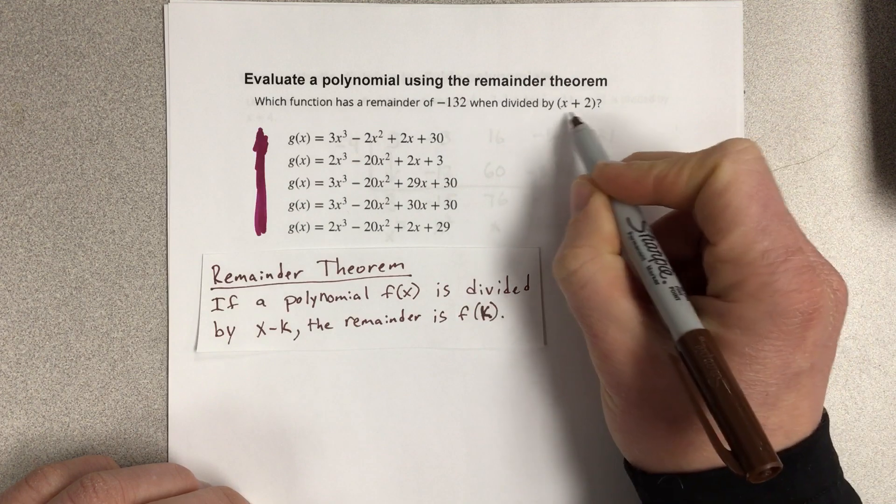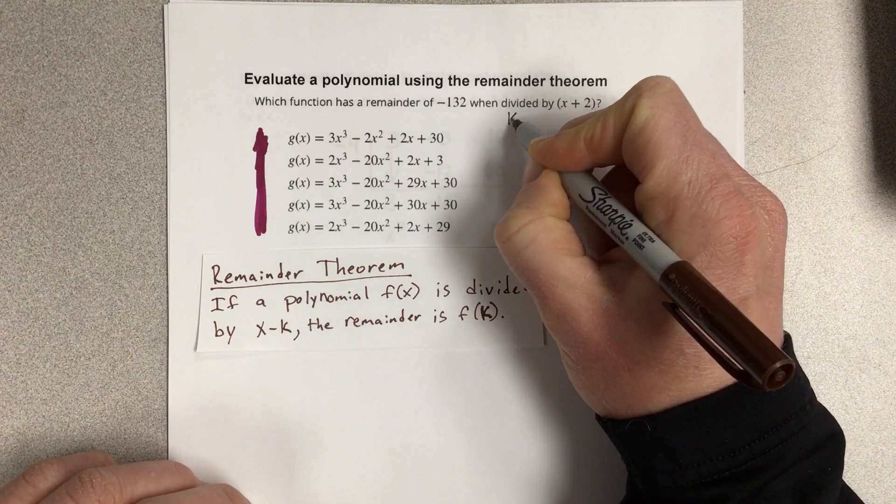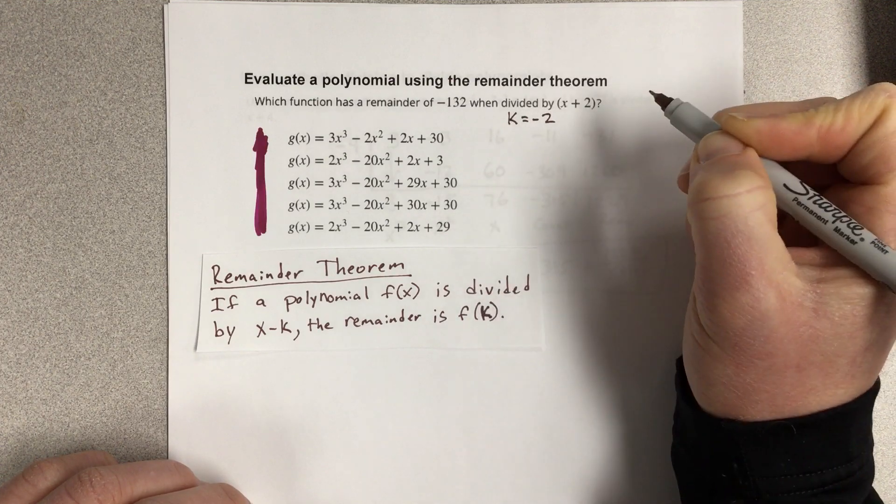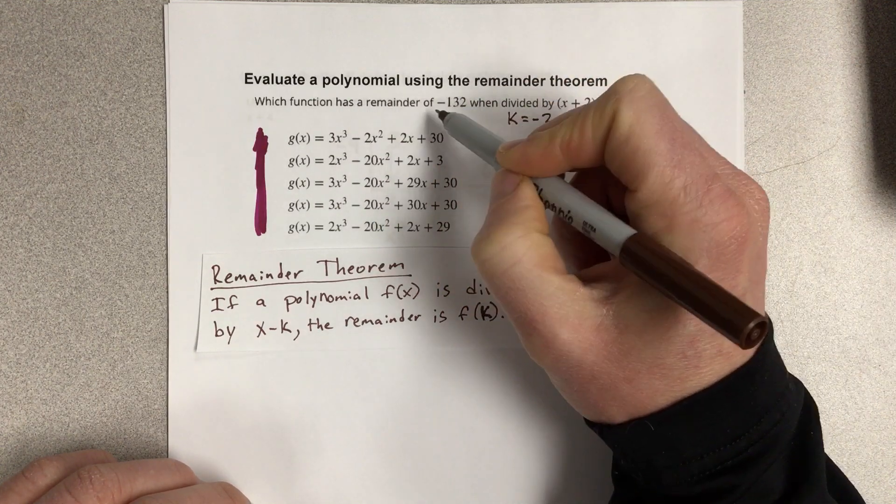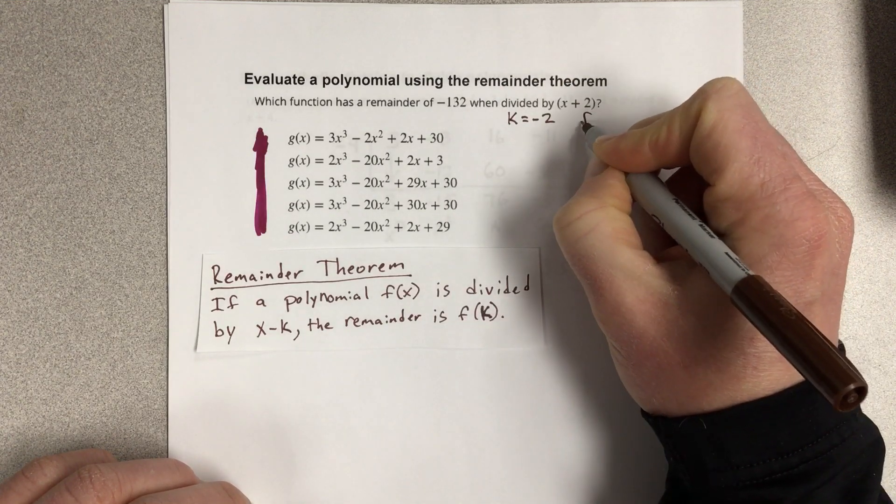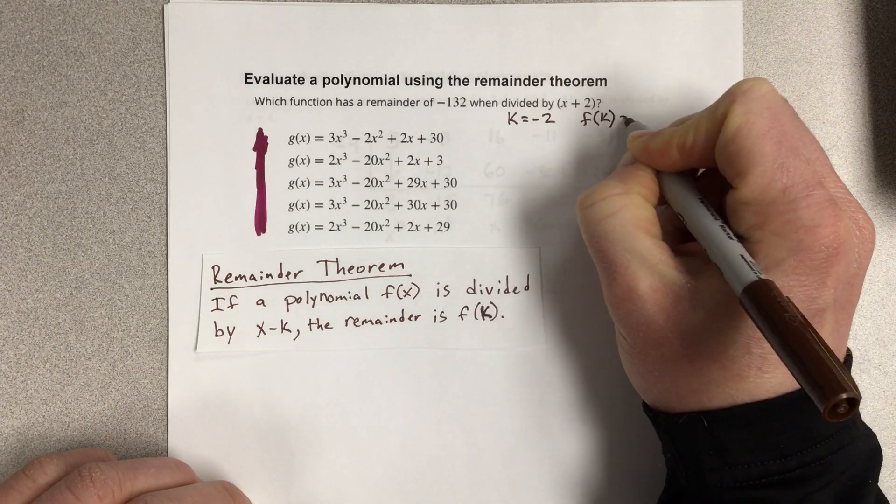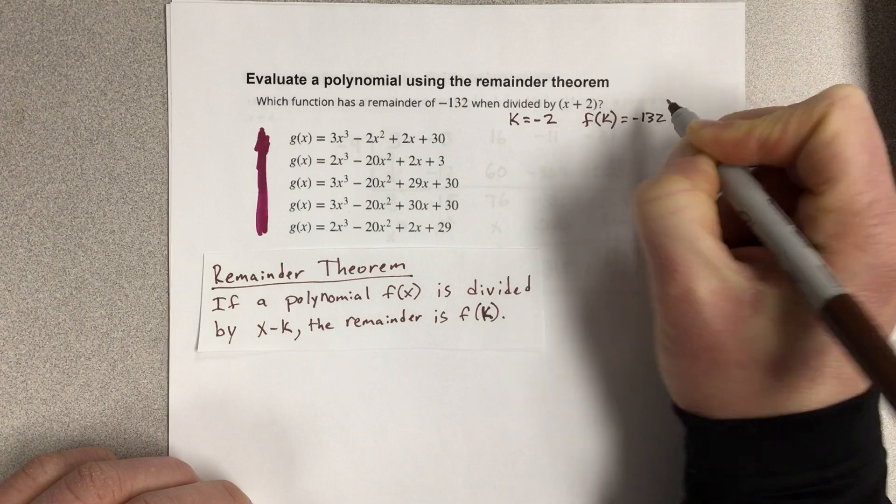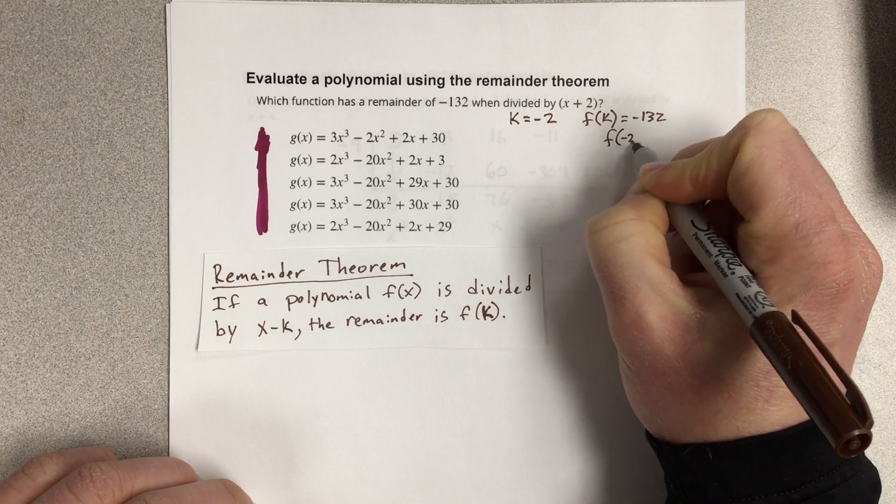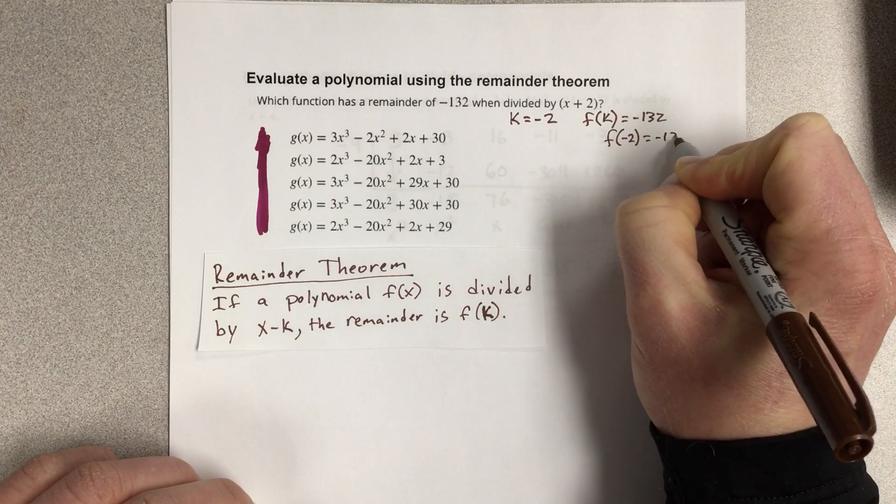If we look at our problem here, we have k is equal to negative 2. And it tells us that the remainder is negative 132, so that's really f of k. Which, if I combine these together, that really tells us that f of negative 2 should be negative 132.